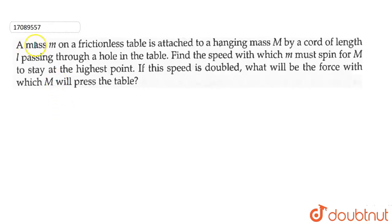In this question, there is a mass M on a frictionless table attached to a hanging mass capital M by a cord of length L passing through a hole in the table. Find the speed with which M must spin for capital M to stay at the highest point. If this speed is doubled, what will be the force with which M will press the table?